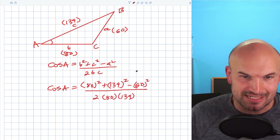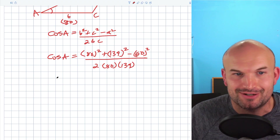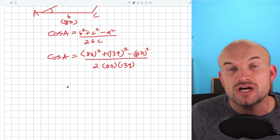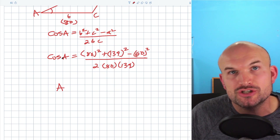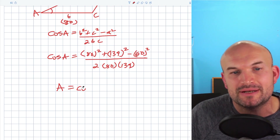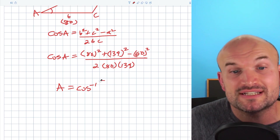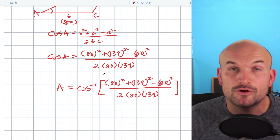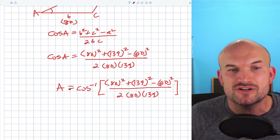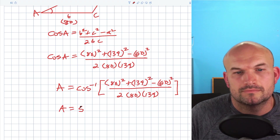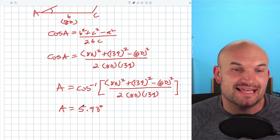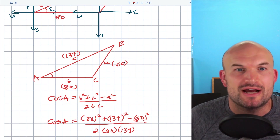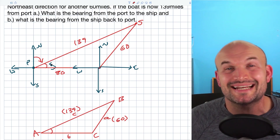Now to find angle A, I'm going to use my calculator. Remember, we're not solving for cosine of A — we're solving for the angle A itself. So make sure you undo the cosine by taking the cosine inverse of all the information. Plug it carefully into your calculator, take the cosine inverse, and we find angle A is equal to 5.90 degrees, which is a pretty small angle. If you look at the original triangle, that makes sense.